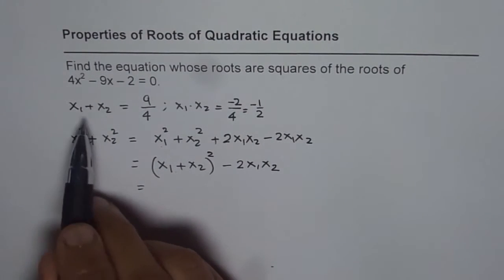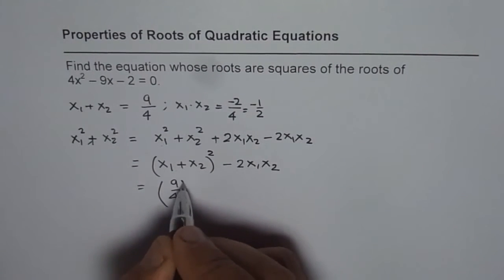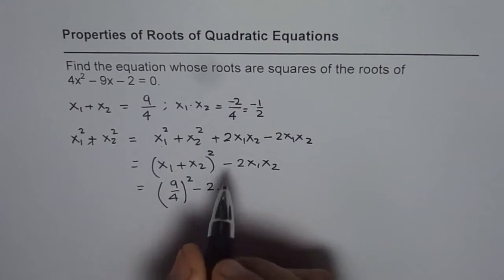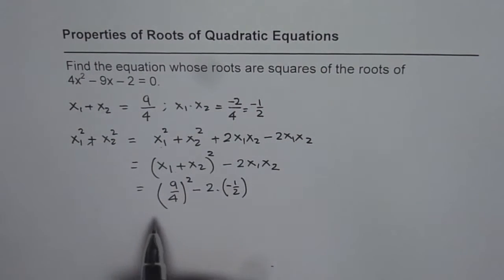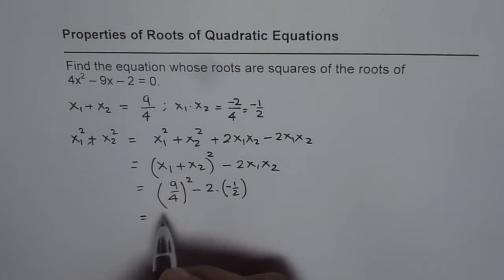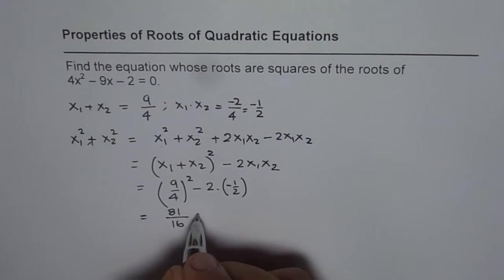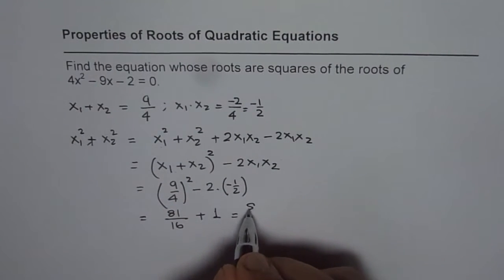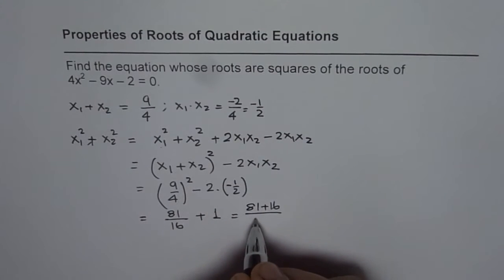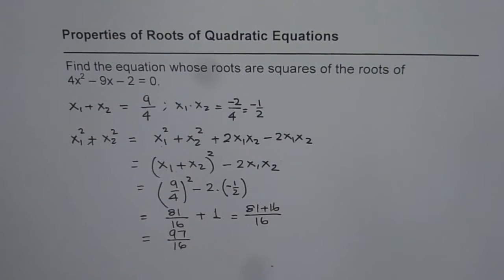Now we know what is x₁ + x₂. x₁ + x₂ is 9/4, so we can replace this by 9/4. That becomes (9/4)² - 2 times x₁x₂ which is minus half. So that gives us 9/4 squared is 81/16, and here we have minus minus becomes plus, plus 1. This could be simplified, and that is what the sum of these two roots is.